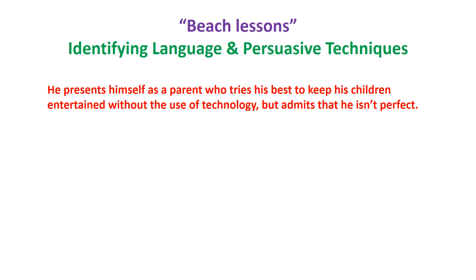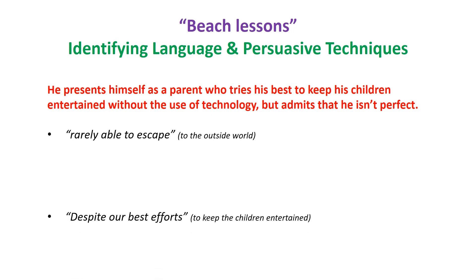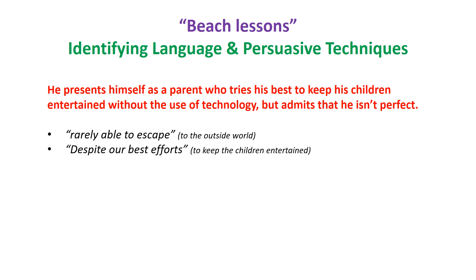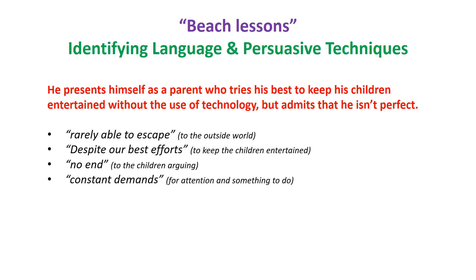I'm writing a list of the arguments we've found. Usually you would just leave it on the article sheet — it's easy to locate and easier to know the context. For this argument, we looked at him presenting himself as a parent who tries his best without technology but admits he isn't perfect. 'Rarely able to escape' refers to being unable to get outside during the winter months. 'Despite our best efforts' is about trying to keep the children entertained. 'No end' refers to the children arguing and squabbling when stuck inside. 'Constant demands for attention and something to do' while they're stuck inside.